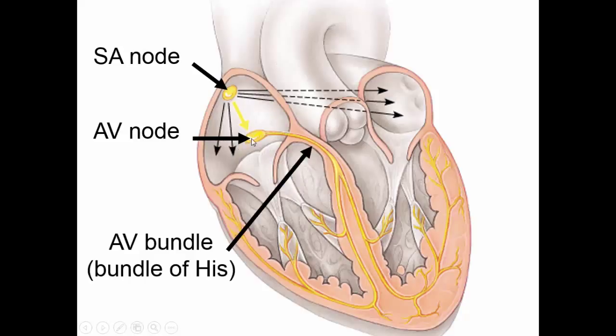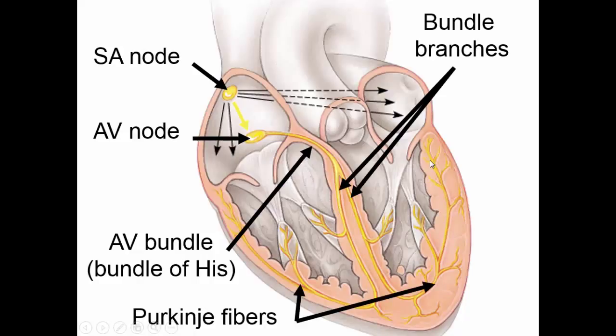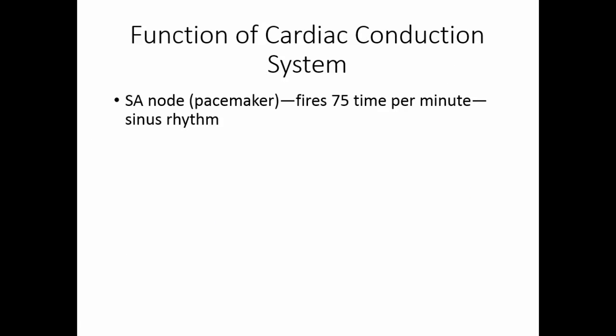When the AV node fires, the impulse goes down the AV bundle and branches to the right and left bundle branches. Then the impulse spreads across the Purkinje fibers, which go to all of the heart muscle cells in both ventricles, causing the ventricles to contract. The SA node acts as the pacemaker, firing about 70 times per minute, setting up what's called a normal sinus rhythm.